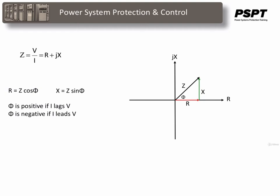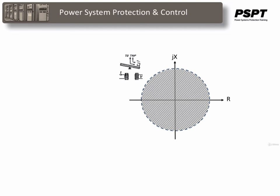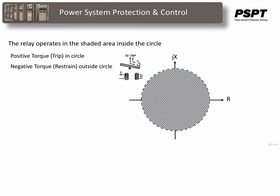Relays which measure plane impedance Z are called impedance relays. The characteristic on an R-X plane is a circle with the center at the origin and a radius equal to Z. Relays which measure impedance but respond to faults in one direction only are called directional impedance relays. The basic impedance relay characteristic circle is not directional — it will operate for any impedance inside the circle. The impedance relay operating characteristic is a circle on an R-X diagram, and it will pick up for any combination of V over I that falls inside the shaded area.